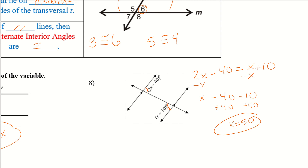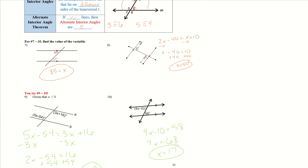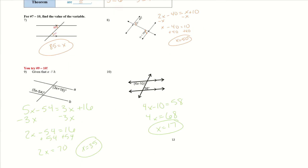I want you to go ahead and try 9 and 10 with those alternate interior angles. Hopefully you gave those a shot. Here are the solutions for 9 and 10. Make sure to pause and check them out if needed.